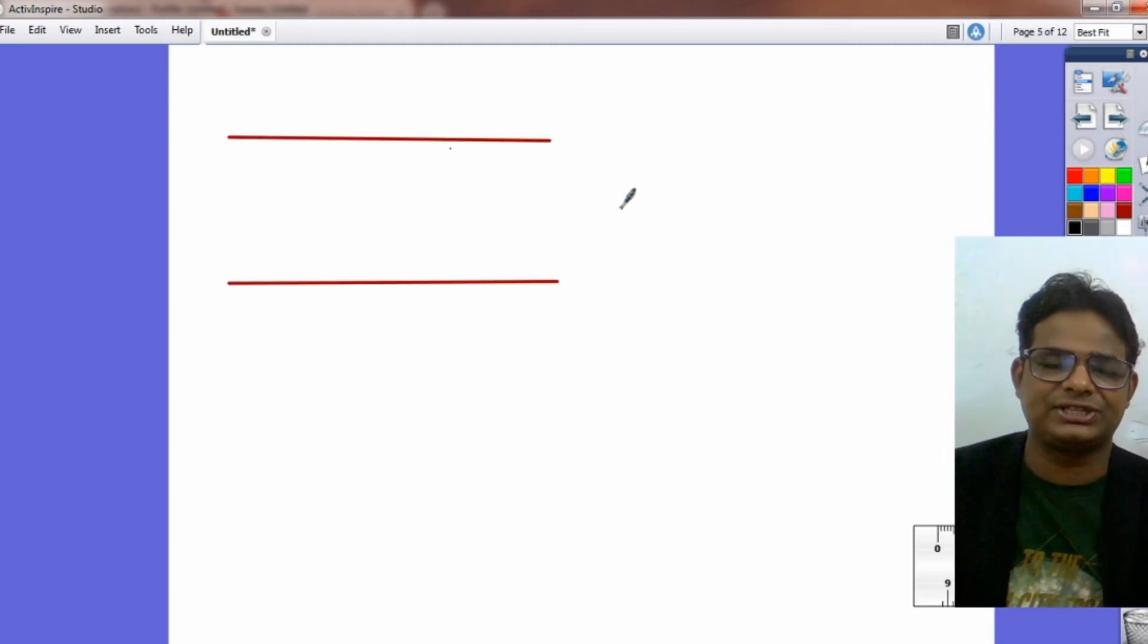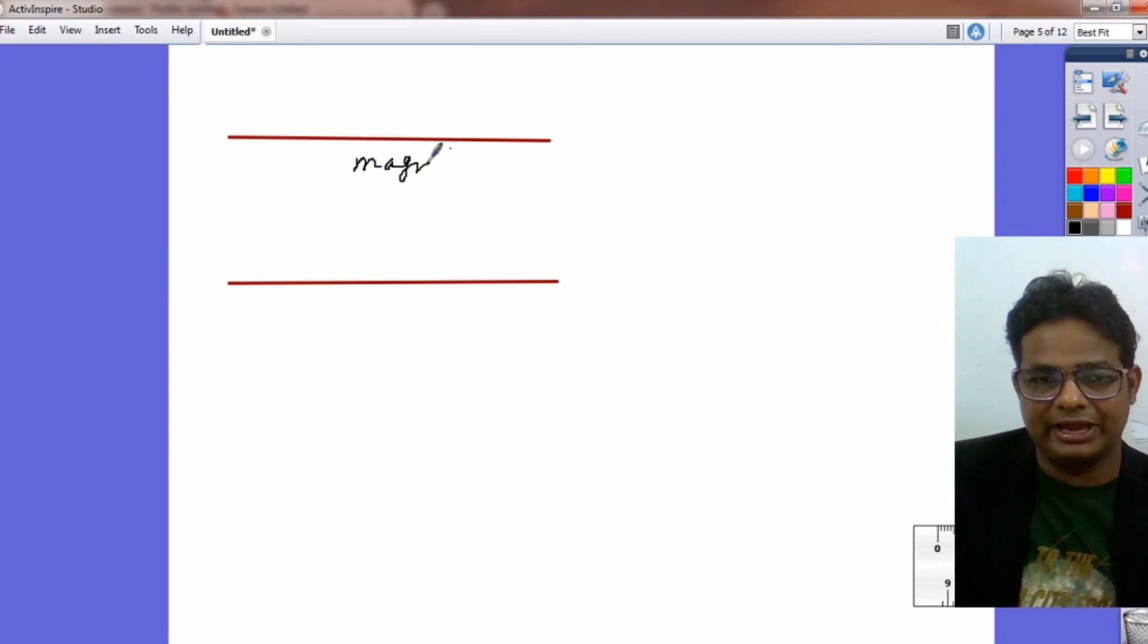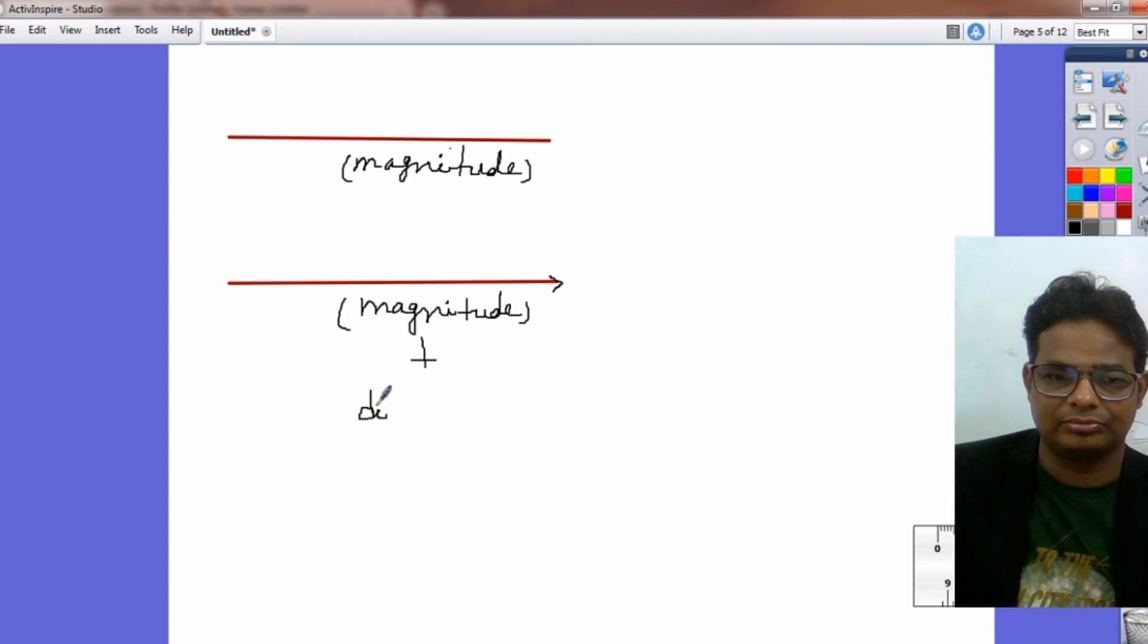Now take a line segment. This line segment has length. That means it has magnitude. Now take another line segment and put an arrow. So it has magnitude. And due to this arrow head, it has direction too.